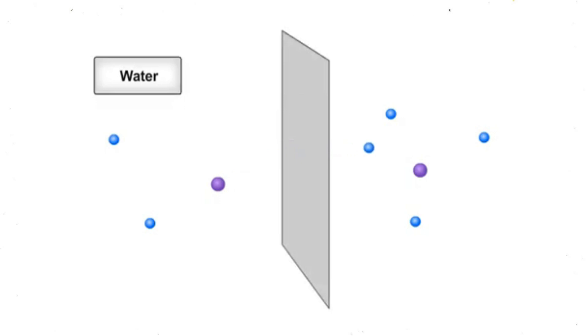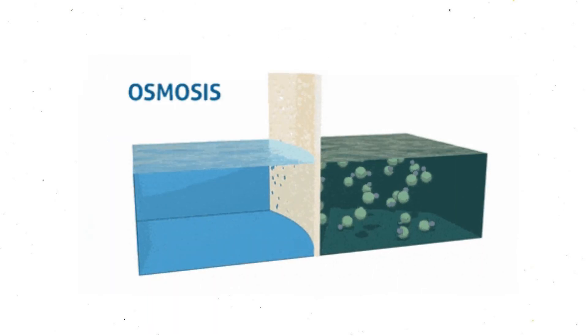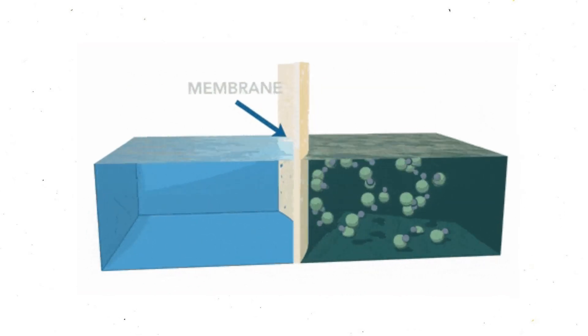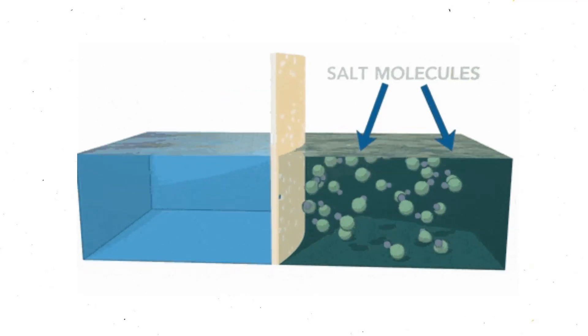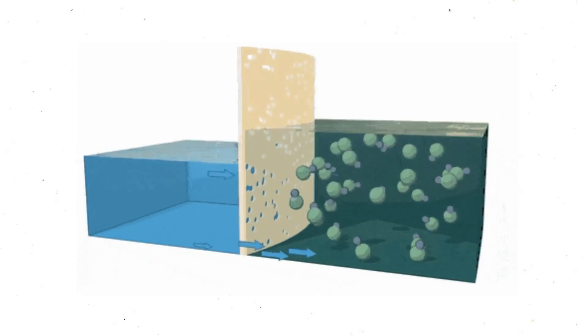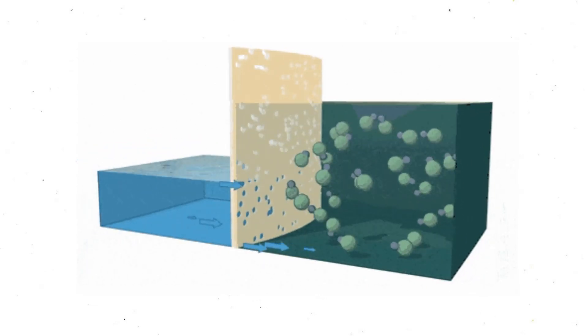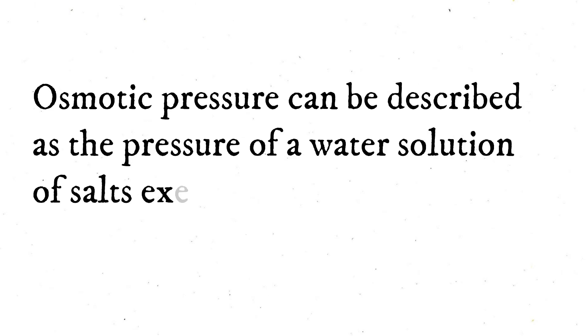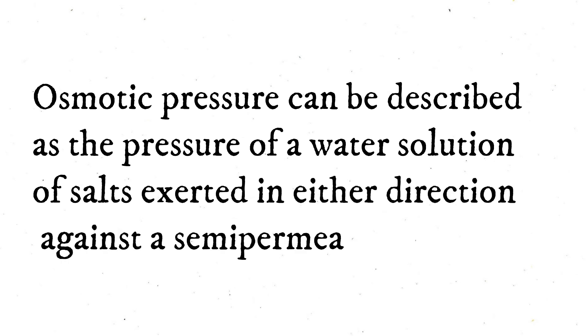Bacterial cells have a plasma membrane which allows the movement of water but not salts to pass through it. Osmosis occurs when two solutions containing different concentrations of solute are separated by a selectively permeable membrane. Solvent molecules pass preferentially through the membrane from the low concentration solution to the solution with the higher solute concentration. The transfer of solvent molecules will continue until equilibrium is attained. Osmotic pressure can be described as the pressure of a water solution of salt exerted in either direction against the semipermeable membrane.